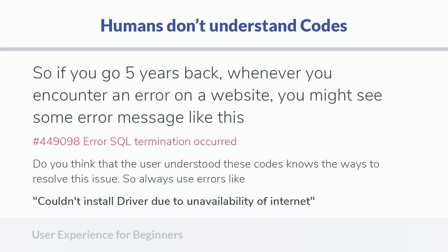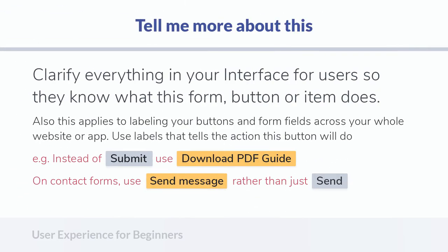A better example is: 'Couldn't install driver due to unavailability of internet.' This is a very simple mistake, and I have seen a lot of developers leaving these kinds of errors on their apps and websites. Try to use simple, actionable language that leads to action and tells the user how to fix the error. You can also add a button like 'Try to connect to internet' so the user can take further action to correct the problem.